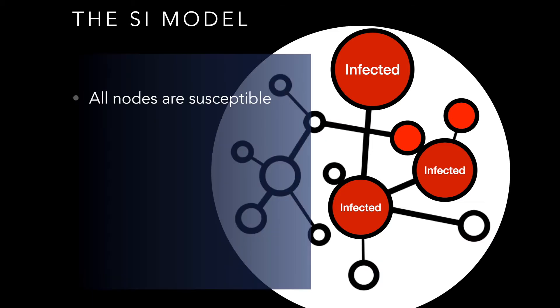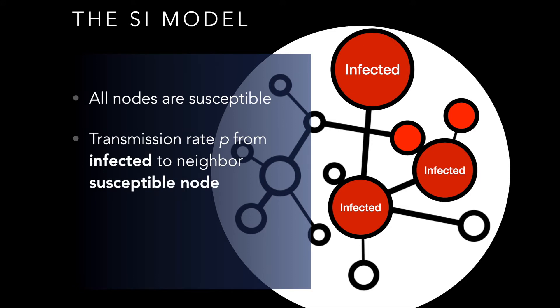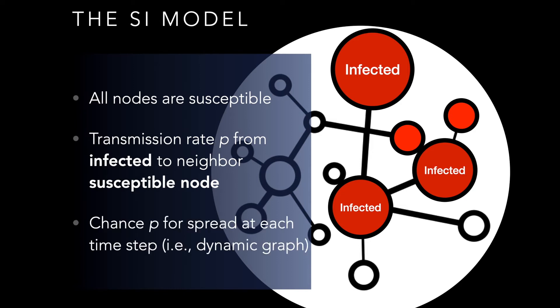We parameterize the SI model by saying at the beginning all nodes are susceptible. The main parameter is the transmission rate P — a stochastic process that determines whether an infection spreads from an infected node to a susceptible neighbor. The higher the P value, the more likely it is that at some time step the contagion will spread. We model this as a dynamic graph where at each time step, for every edge an infected node has, we roll a die and evaluate our value compared to P.